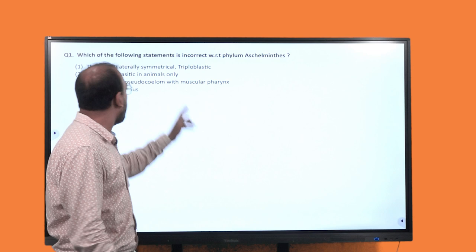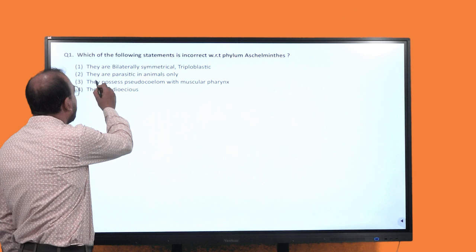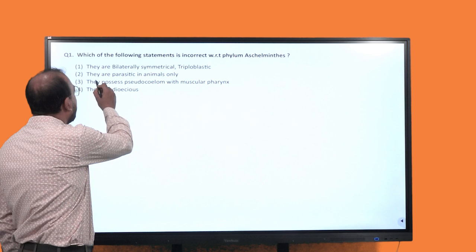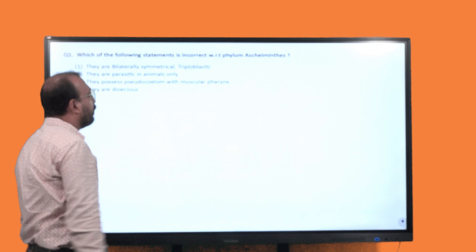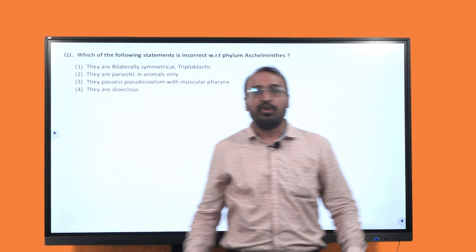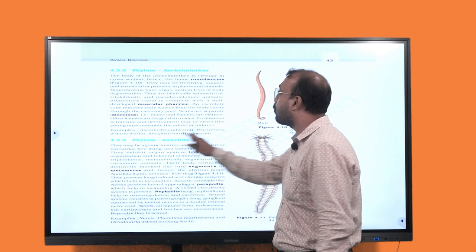Our first example is here: which of the following statement is incorrect with respect to phylum Aschelminthes? The options are - first option: they are bilateral symmetrical and triploblastic. Second one: they are parasitic in animals only. Third one: they possess pseudo coelom with muscular pharynx. And fourth option: they are dioecious. So among these four options, which is the correct answer?